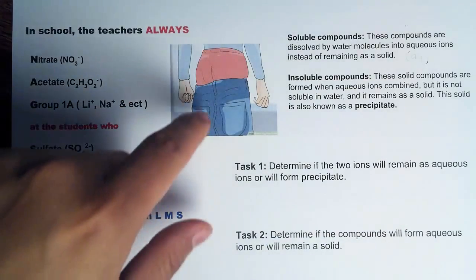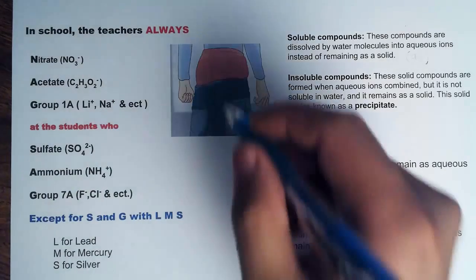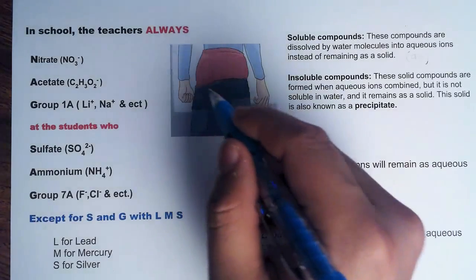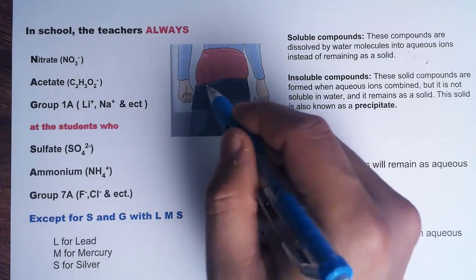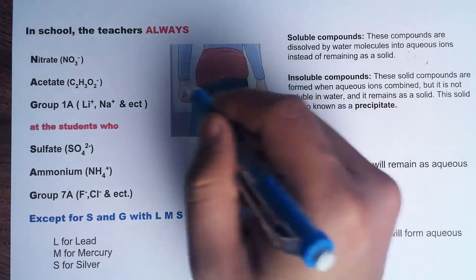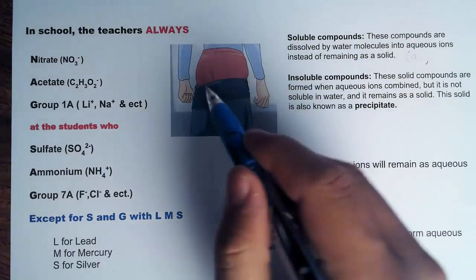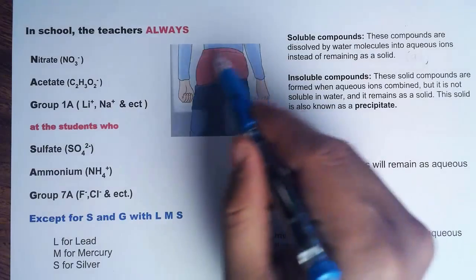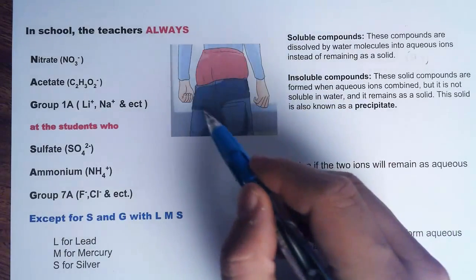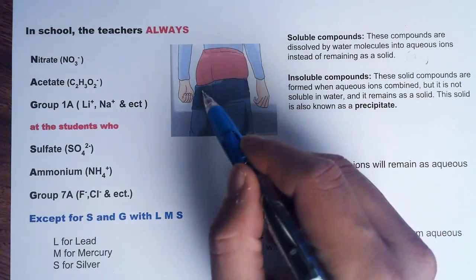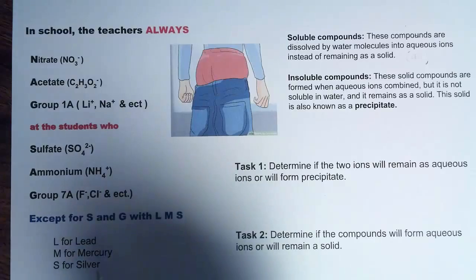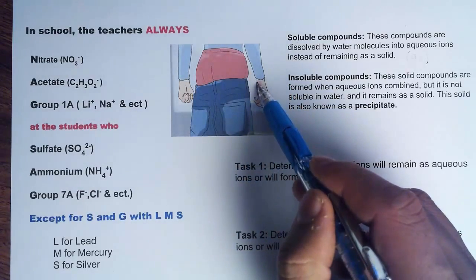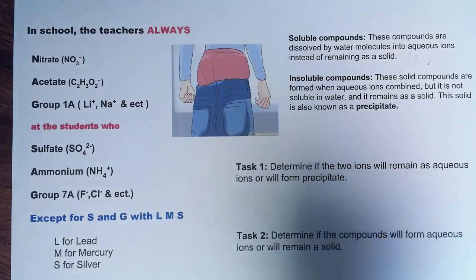It all comes back to this picture — we have a student with saggy pants. You can see their underwear and the pants are kind of falling apart — saggy. When you think of the solubility rules, think of this picture of a student with saggy pants.